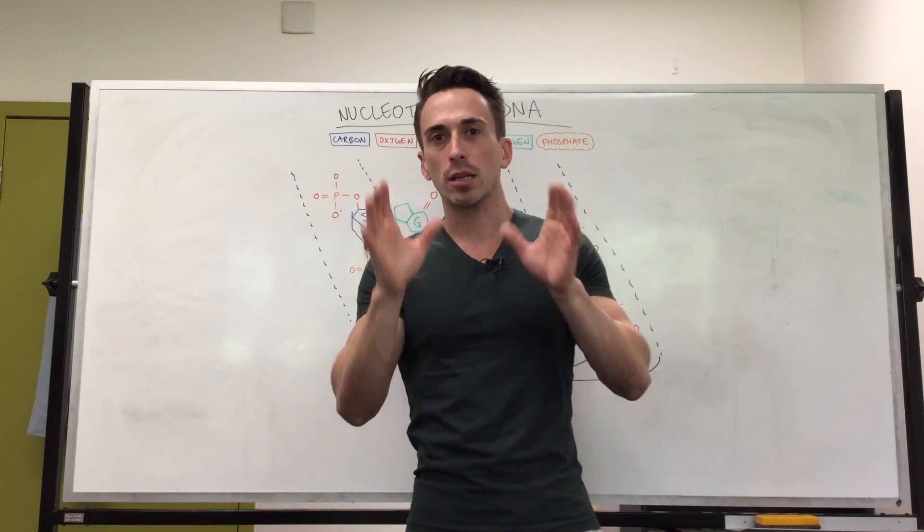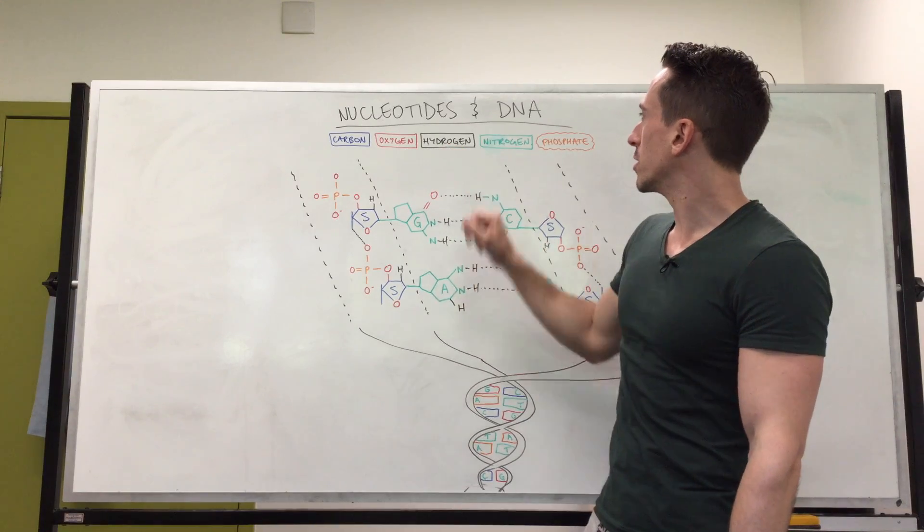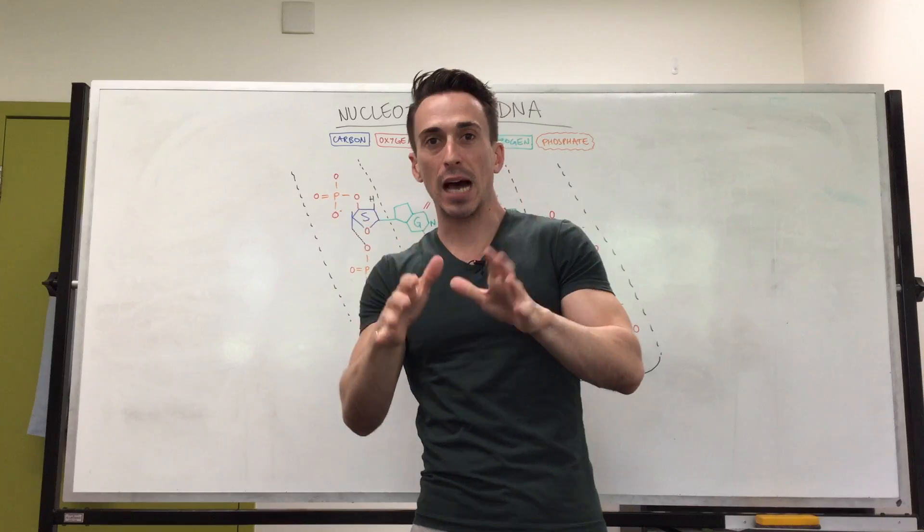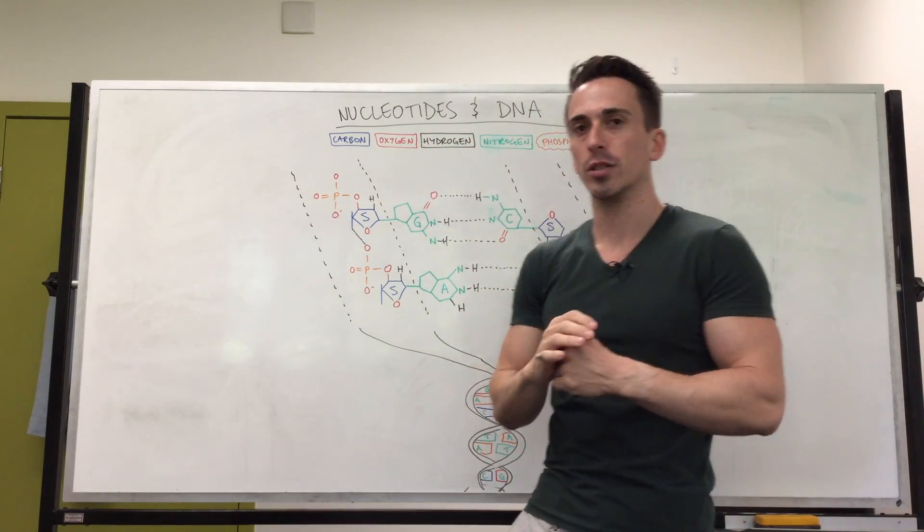Now nucleotides are comprised of carbons, oxygens, hydrogens and nitrogens. We spoke about proteins, fats, and carbs - they also contain carbon, oxygen, hydrogen, and nitrogens except carbs that don't contain nitrogens.